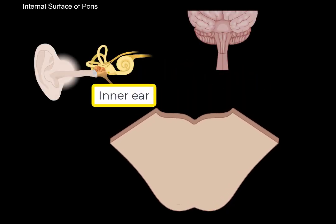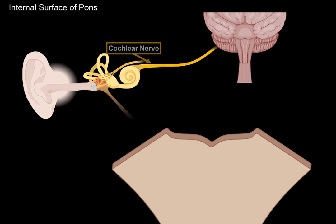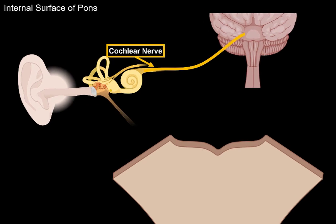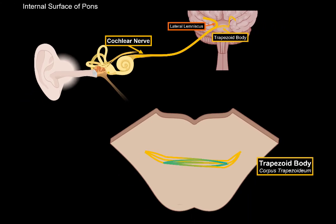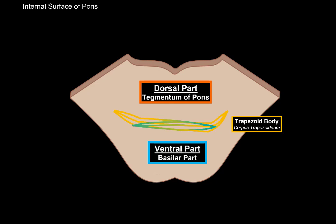We need to go through an important landmark that separates pons into two parts. The cochlear nerve goes directly towards pons and then ascends as the lateral lemniscus to the superior temporal gyrus. Some fibers cross to the other side and also ascend as the lateral lemniscus. As these fibers cross within pons, they form the trapezoid body. The trapezoid body divides the internal surface of pons into two regions: the dorsal part becomes the tegmentum of pons, and the ventral part becomes the basilar part.